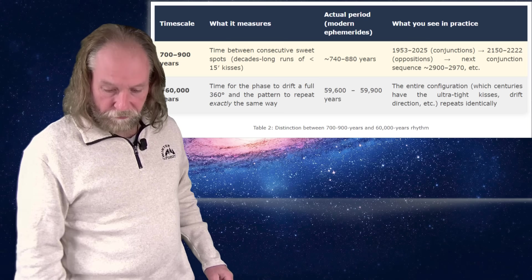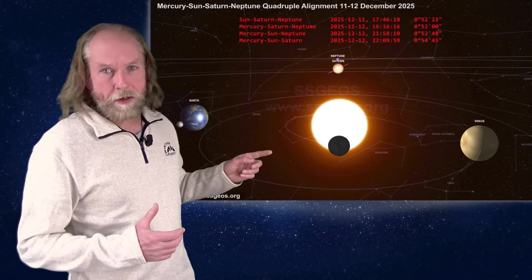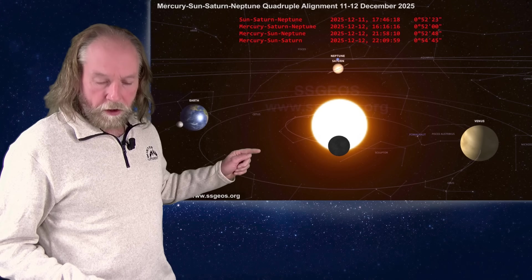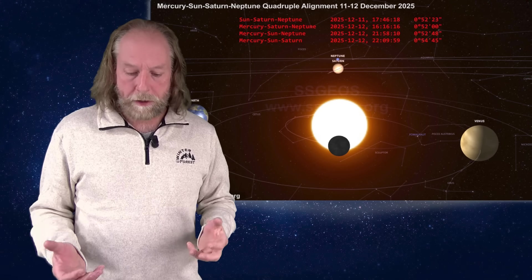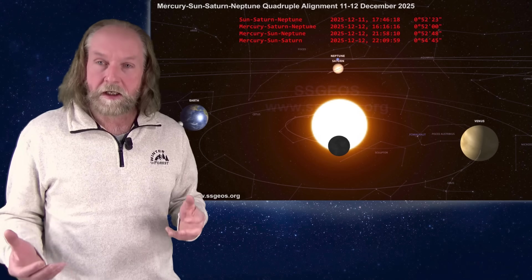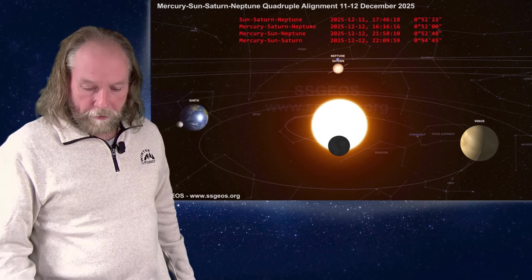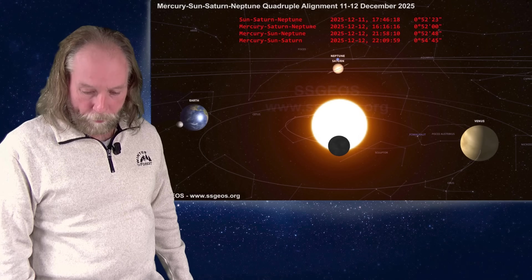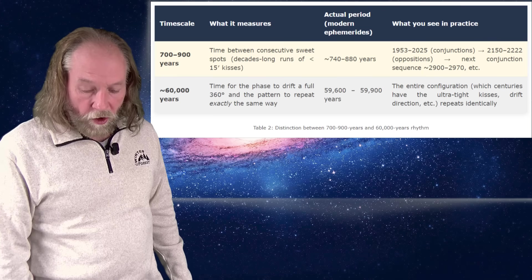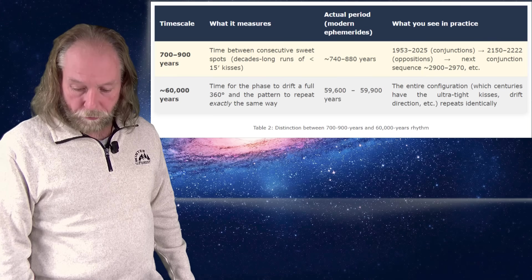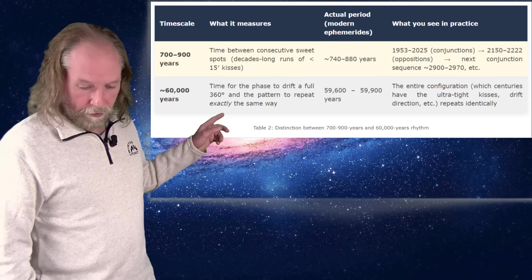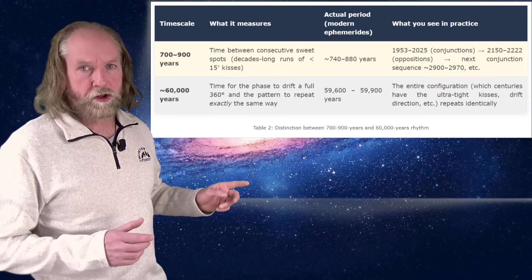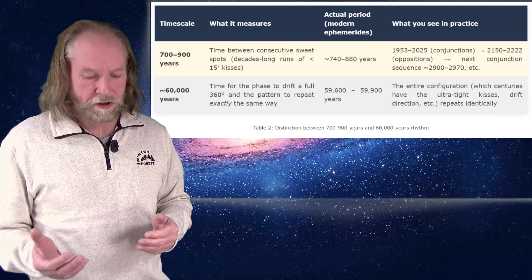Now, we have different configurations. If you look at the quadruple conjunction that we have in a couple of days, we have this specific geometry with Mercury on one side of the Sun and then the grand conjunction. But we also have oppositions, like Mercury on the other side or Saturn on the other side, that's the grand opposition. That will also cause a sequence of quadruple patterns and that will be in 2150, from 2150 to 2222. And any combination of this quadruple conjunction repeats itself in a sequence roughly every 800 years, 700 to 900 years.